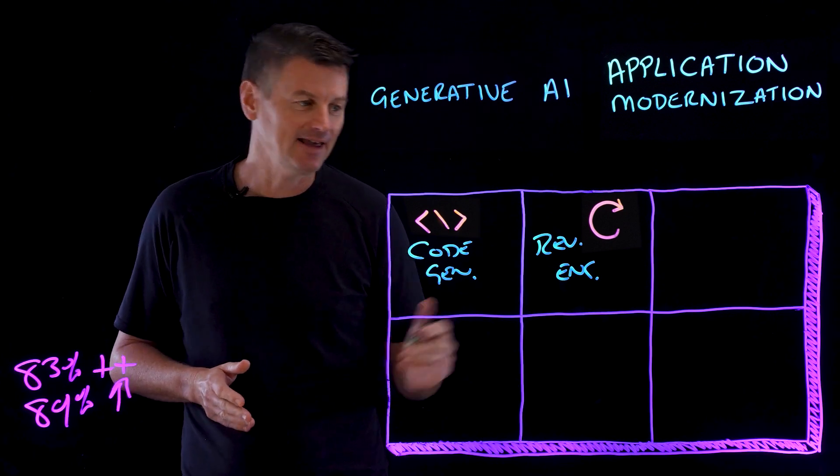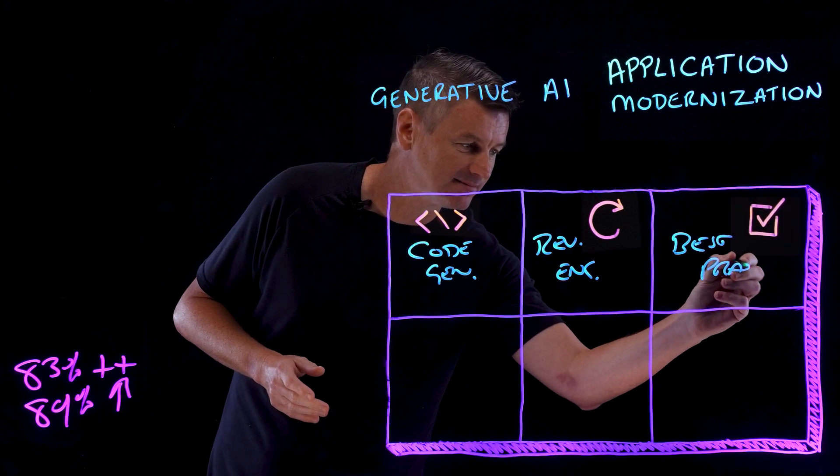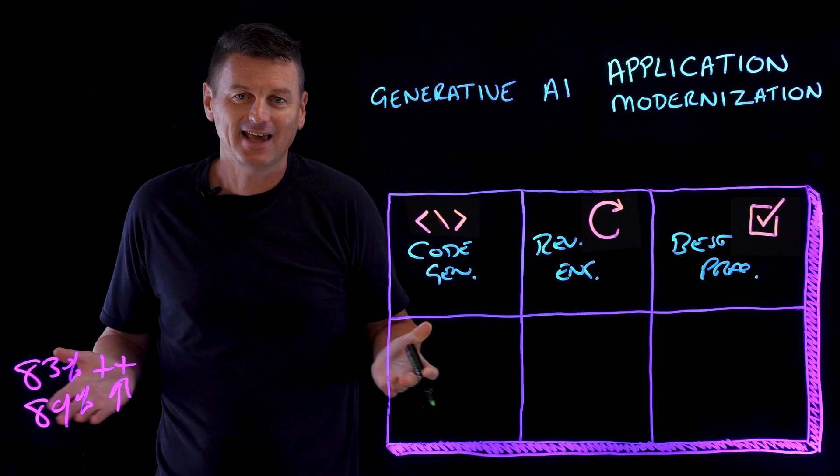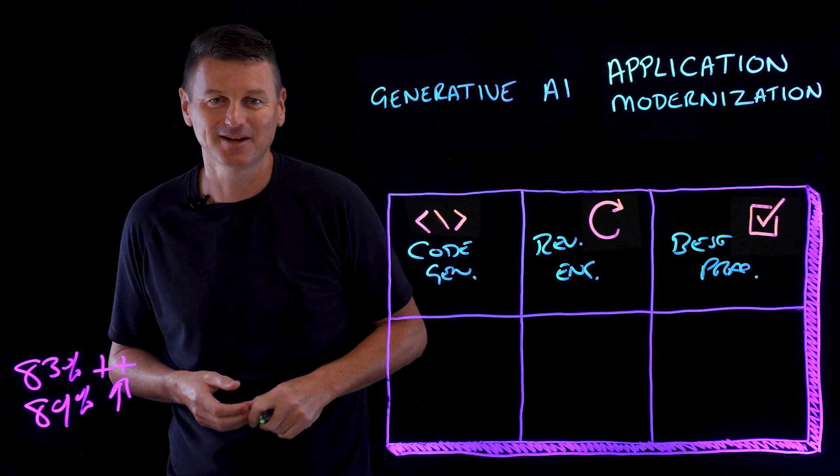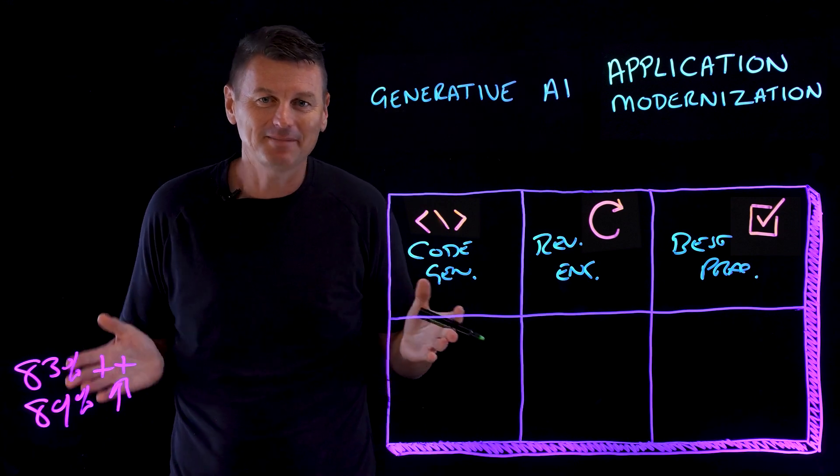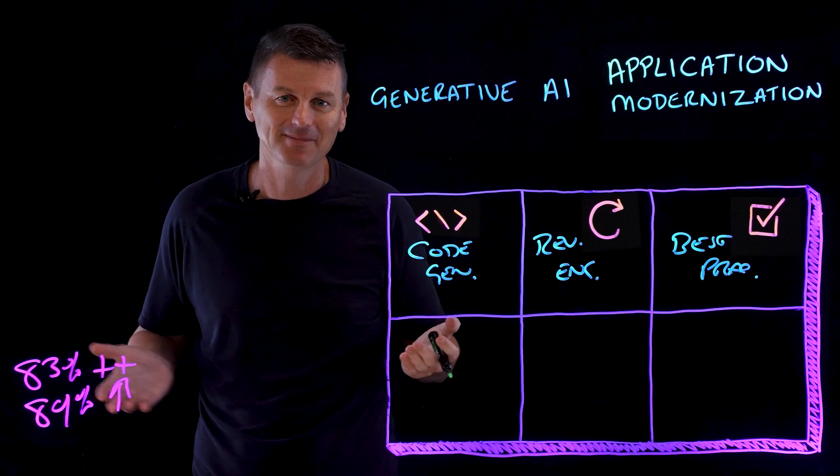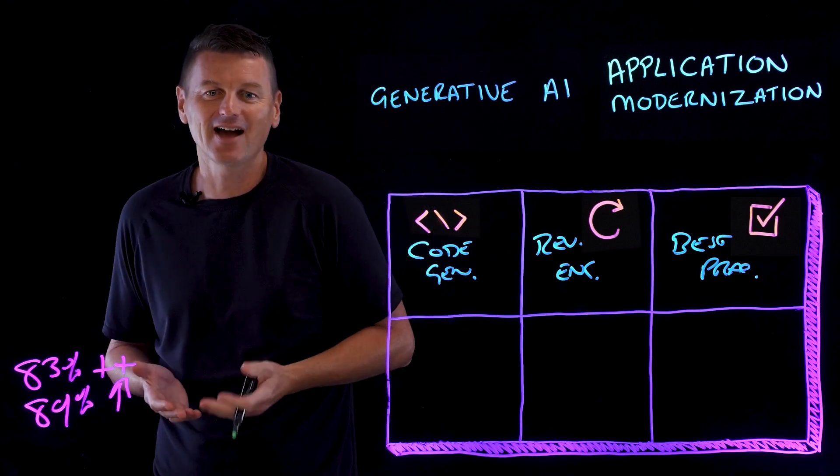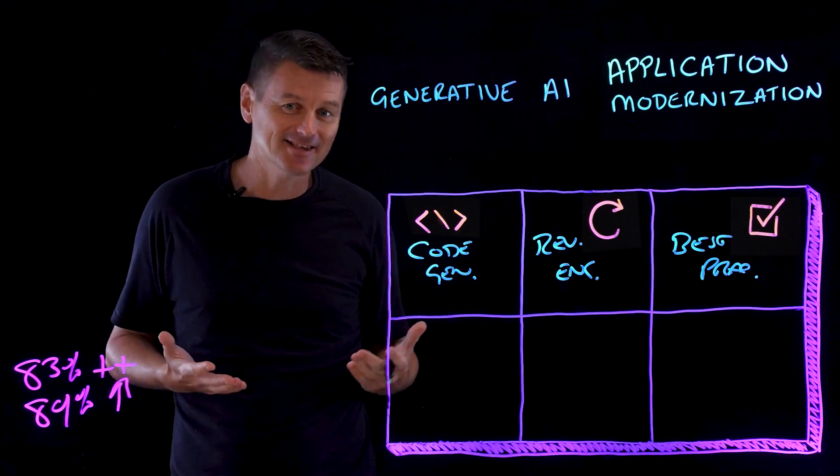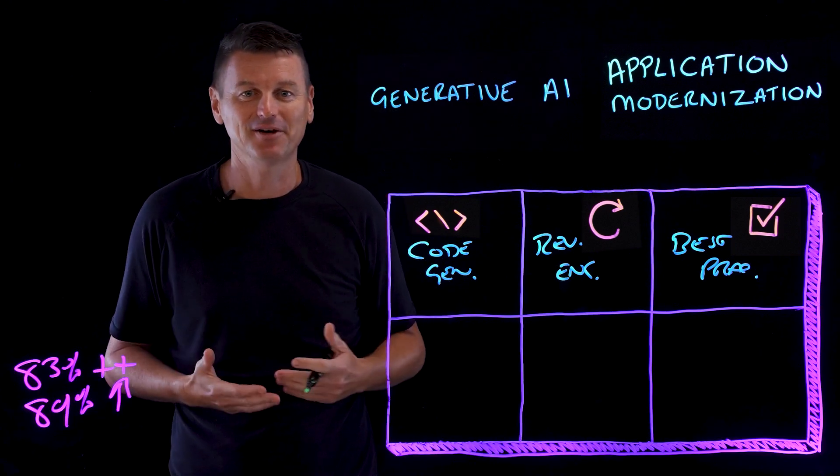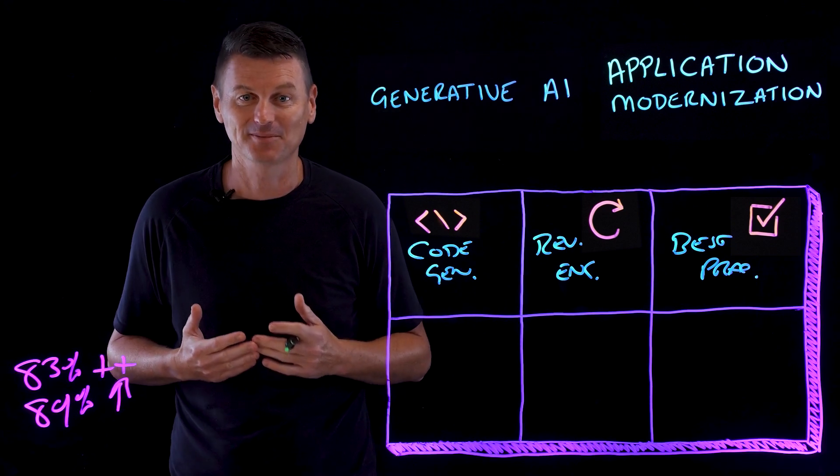Another capability is in the area of best practices. Now, let's face it. Keeping up with the best way to do things can feel like trying to hit a moving target sometimes. So wouldn't it be great if, as you code, somebody taps you on the shoulder and provides recommendations? Well, generative AI can be that insightful colleague by analyzing vast data sets, repositories and patterns. Generative AI can proactively suggest coding or architectural best practices.